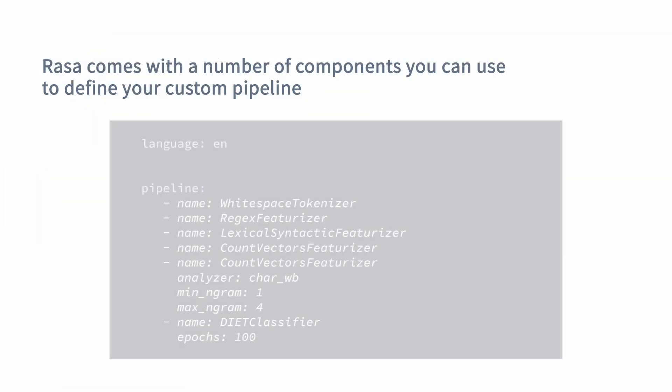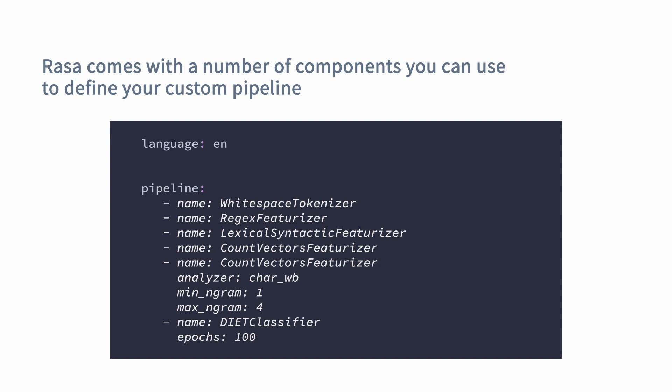As mentioned previously, if you start developing your assistant using the Rasa init function, a config.yaml file with an example pipeline will be created for you. You can then make changes to that pipeline, or you can build the pipeline completely from scratch by defining specific components inside of your config.yaml file. A very important point about pipeline components is that the order of your components inside the config.yaml file matters — the first component will be trained and used first. Also, some components may use the results of previous components, so you should always be mindful of the order you provide for your pipeline components.